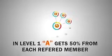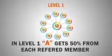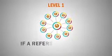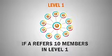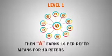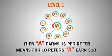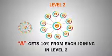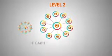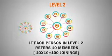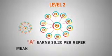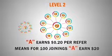At level one, for direct referrals, A will get 50 percent commission. If A refers 10 friends at level one successfully, A will get one dollar from each referral, earning 10 dollars at level one. A will get 10 percent from level 2 — if every person of level 2 refers at least 10 friends, there will be 100 joinings for A, and A will get 20 cents from each referral, earning 20 dollars from level 2.